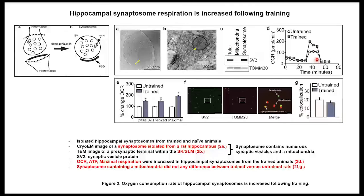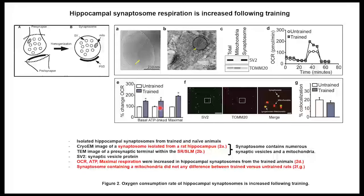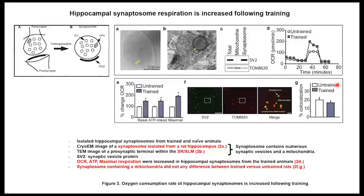The OCR experiment in synaptosomes shows trained mice have a higher OCR rate compared to untrained. They measured basal OCR, ATP-linked, and maximum OCR — trained mice show higher rates across all indices. The co-localization data of SV2 and mitochondria shows that the merge area looks very similar between untrained and trained mice, meaning the number of mitochondria in synaptosomes is similar between the two groups.